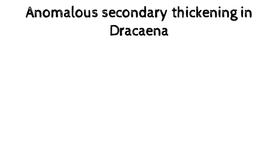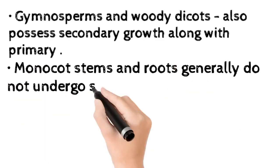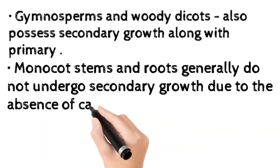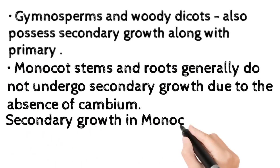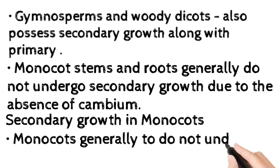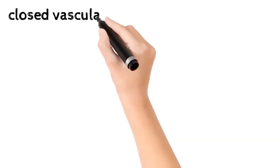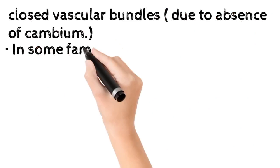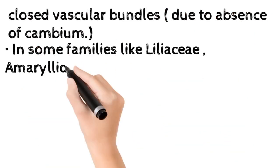Monocots and some herbaceous dicots possess only primary growth. Gymnosperms and woody dicots also possess secondary growth along with primary growth. Monocot stems and roots generally do not undergo secondary growth due to the absence of cambium.